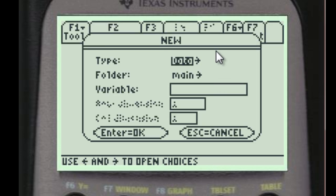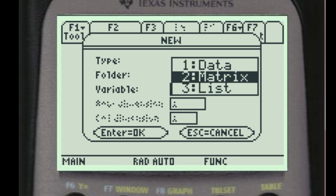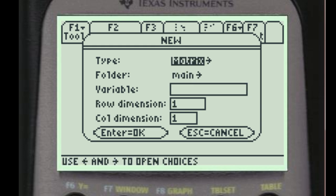Now here's where most of the confusion lies: where it says type data, you actually want to press the right arrow key and select matrix from this menu. This will set it up as a matrix; your calculator will store it as a matrix. You can use it as a matrix and do all the things that you have learned to do with matrices.